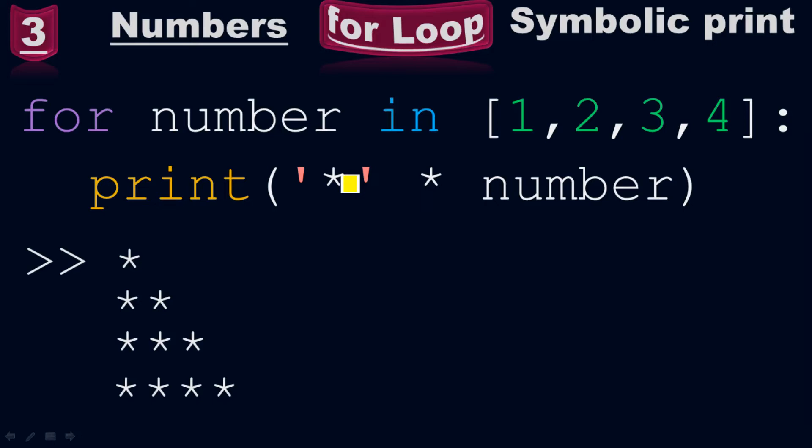When the for loop iterates on 1, 1 times asterisk will be 1 asterisk here. And then when it iterates on 2, the number is 2 here, therefore 2 times asterisk will be 2 asterisks here. Instead of showing the number, we will have asterisks, the symbols, in the output.